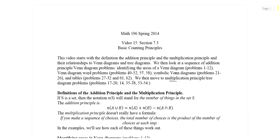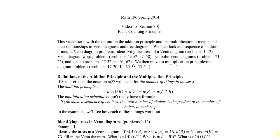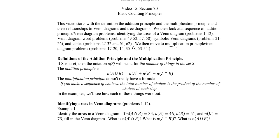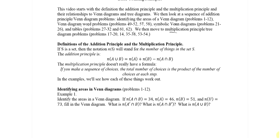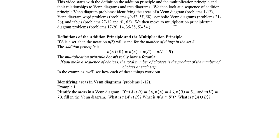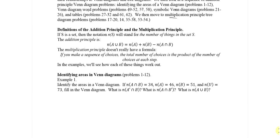So what are the definitions of the addition principle and the multiplication principle? Like most things in math, we become a little more clear once we do some examples. So S is some set, and N of S is the number of things in the set S. Addition principle: the number of things in A union B is the number of things in A plus the number of things in B minus the overlap — the number of things in A intersection B.